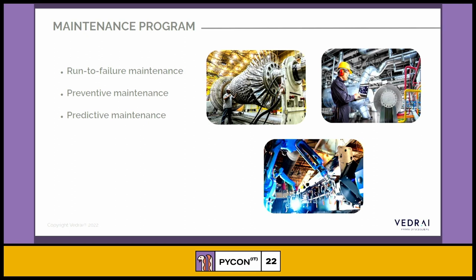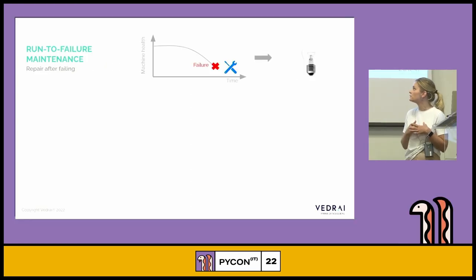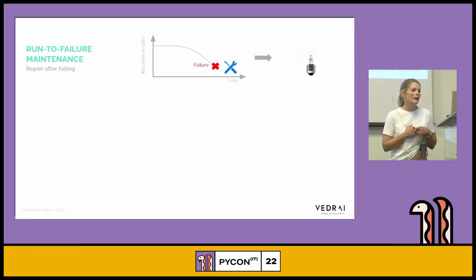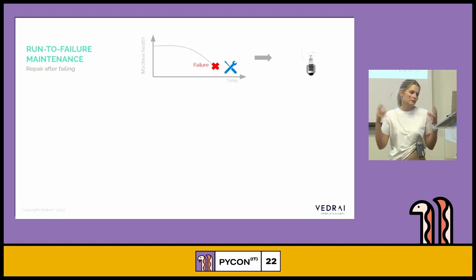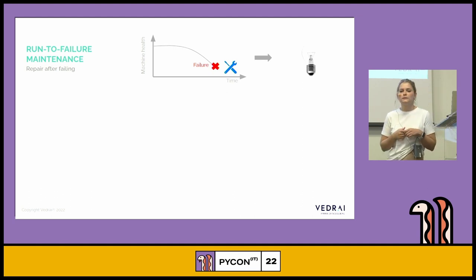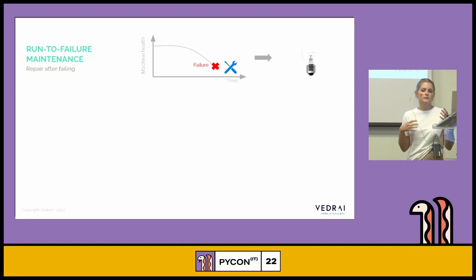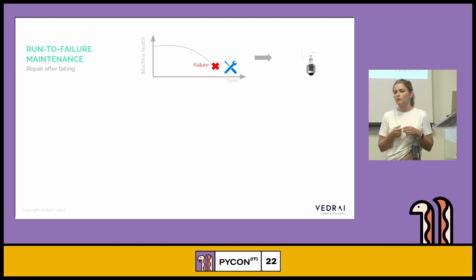The first type is run-to-fail maintenance. It is the most traditional type of maintenance and it occurs when the failure has already occurred. It can be applied in simple scenarios — for example when a light bulb burns out — but in complex scenarios it's inefficient because the downtime period can really decrease the efficiency of the equipment.